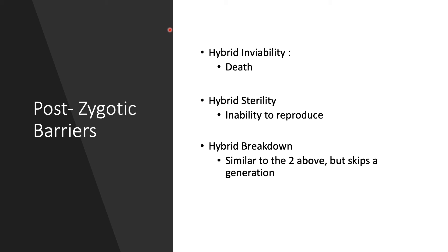Now let's look at postzygotic barriers, which occur after two individuals have mated. The first is hybrid inviability — essentially, the hybrid offspring doesn't survive. Maybe it either doesn't get born, or if it does, it passes away very soon after due to health reasons. We've seen this in some animals.